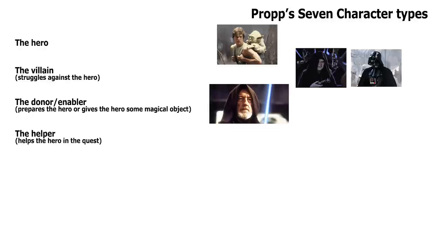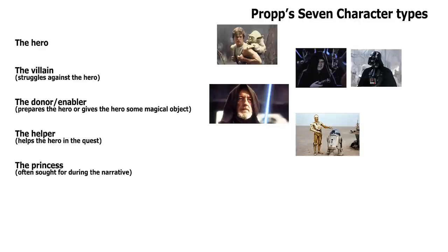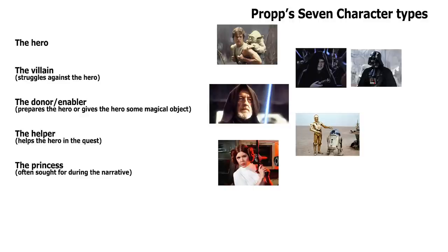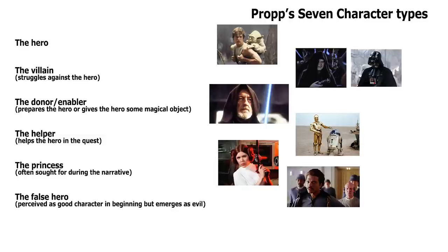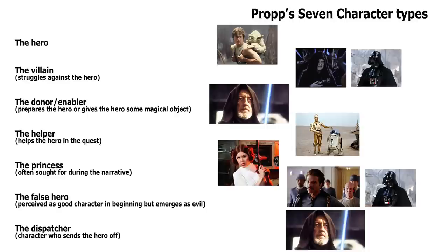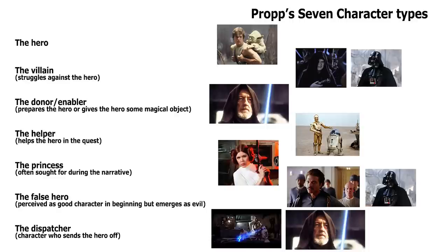Then there's the helper, who helps the hero in their quest — in this case it's the droids. Then there's the princess, who is often sought for during the narrative. Then there's the false hero — perceived as a good character in the beginning but emerging as evil later on; in this case Lando Calrissian, or depending on the episode, perhaps Darth Vader or Anakin Skywalker. Then there's the dispatcher, a character who sends the hero off on their quest — in this case Obi-Wan Kenobi or R2-D2: R2-D2 delivers the message, Obi-Wan sends him out.